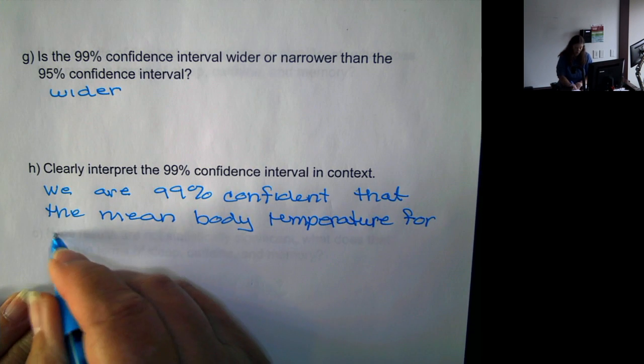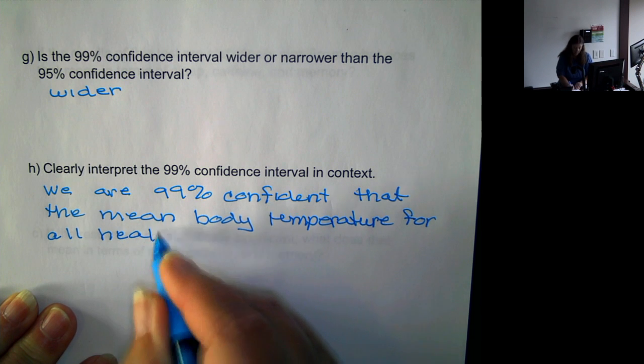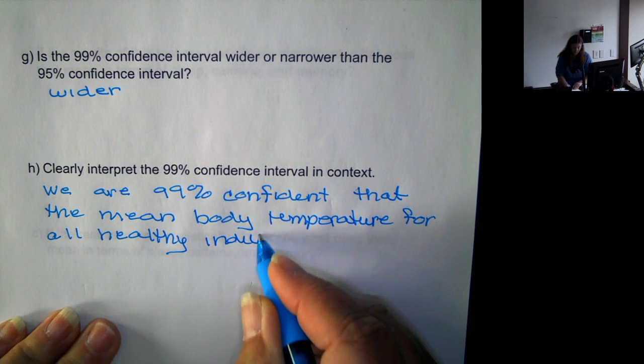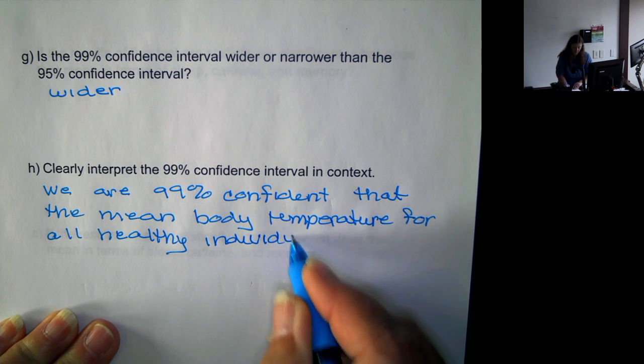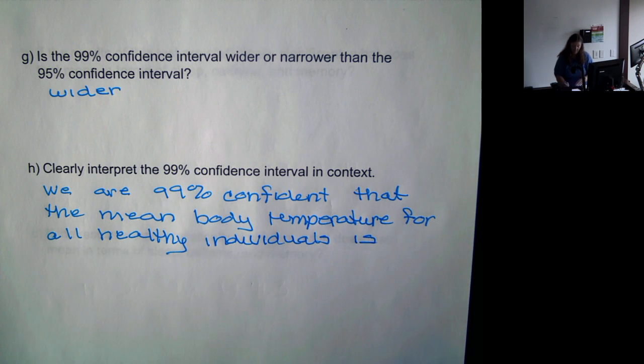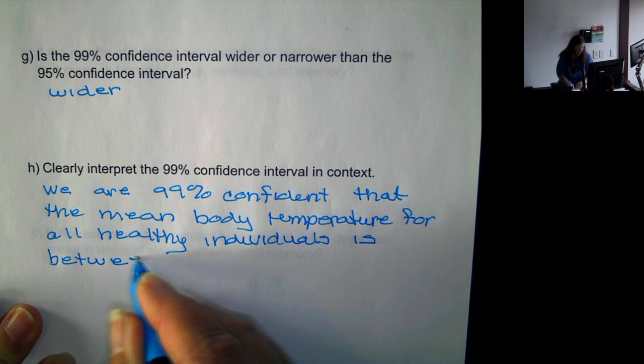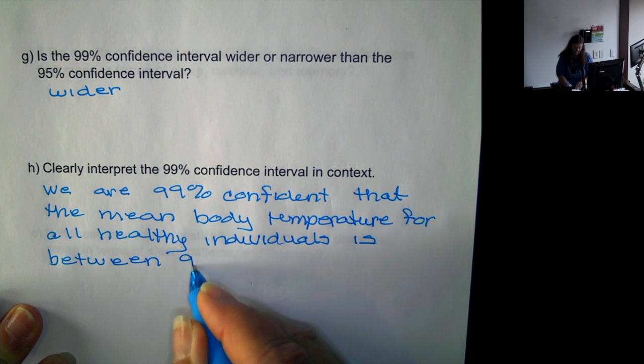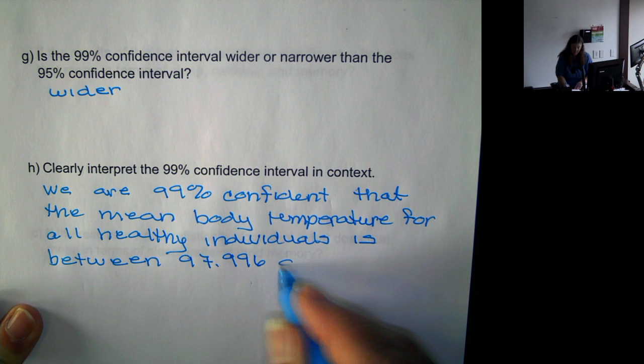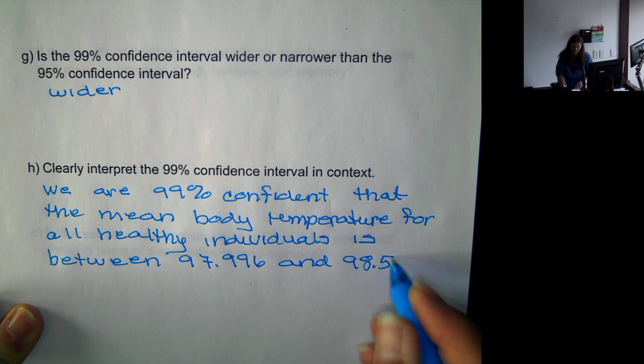So we are 99% confident that the mean body temperature for all healthy individuals is, and now we give our interval, between 97.996 and 98.532.